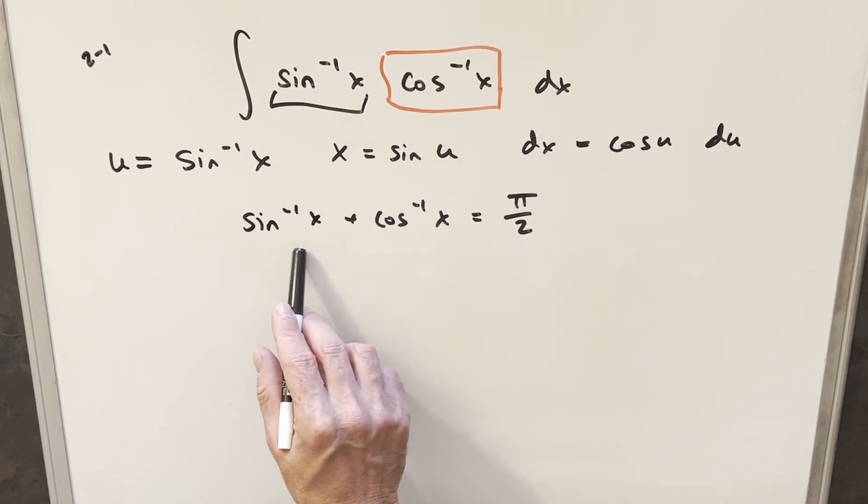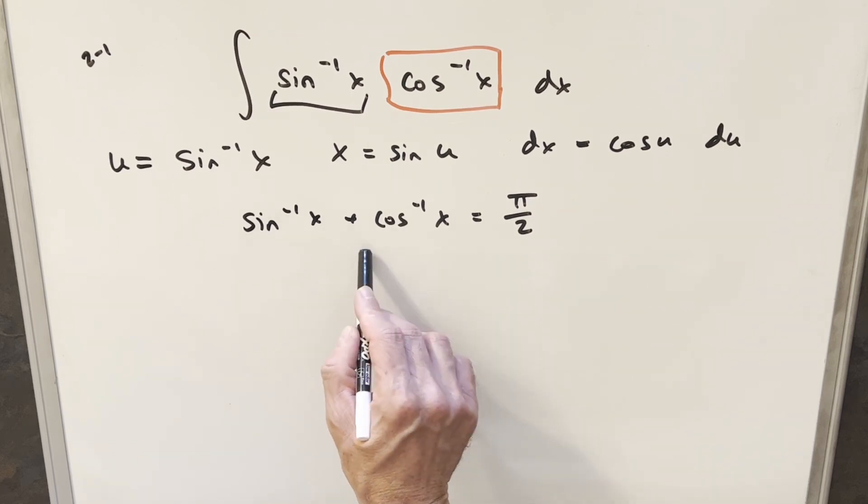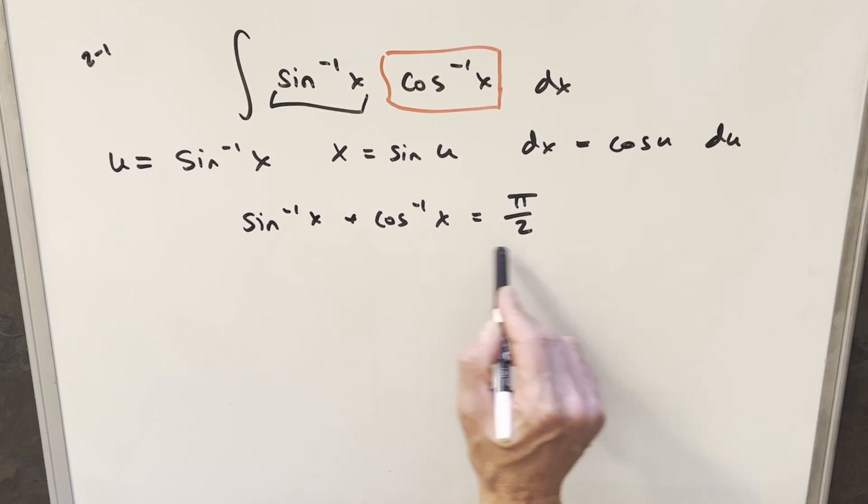We have this formula on the board that arcsine of x plus arccosine of x equals π over 2. I believe I did some videos related to this. I think I did arctan plus arccotangent is π over 2. But this works out very similar.